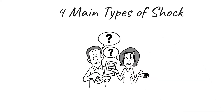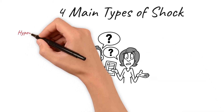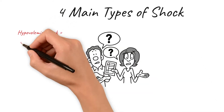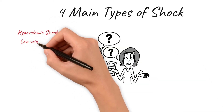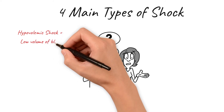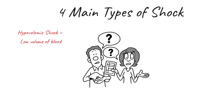First of all we have hypovolemic shock. Hypo means low, volemic means volume. This is the most common type of shock. It means there's insufficient blood circulating around the body, normally due to a hemorrhage, or it could be because of severe vomiting and diarrhea.